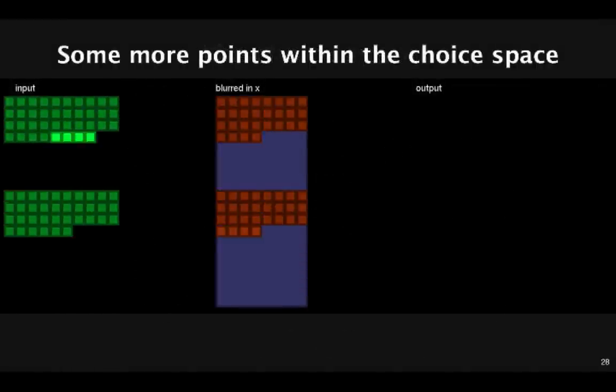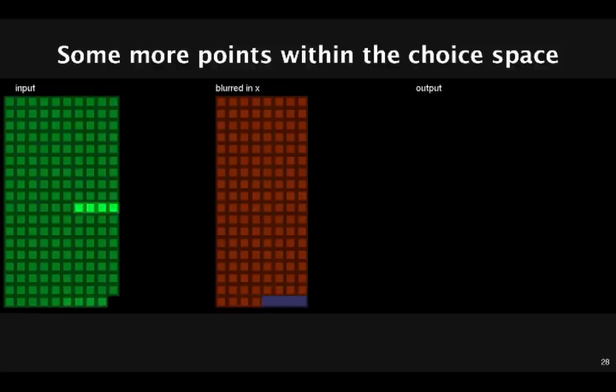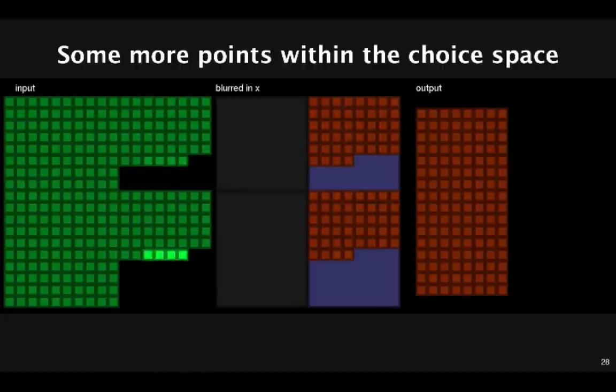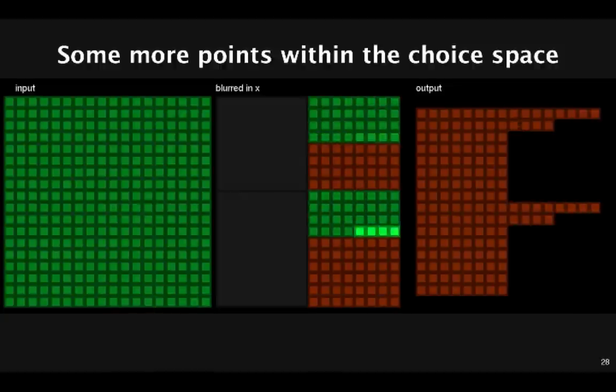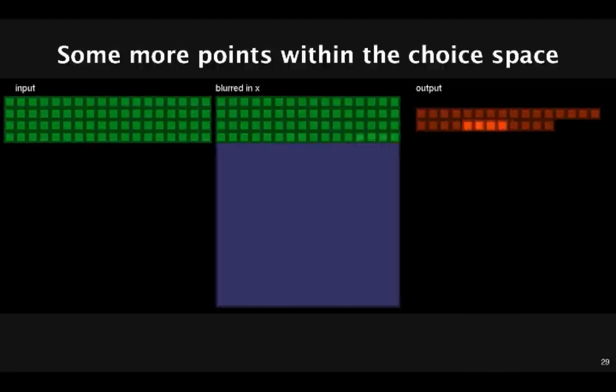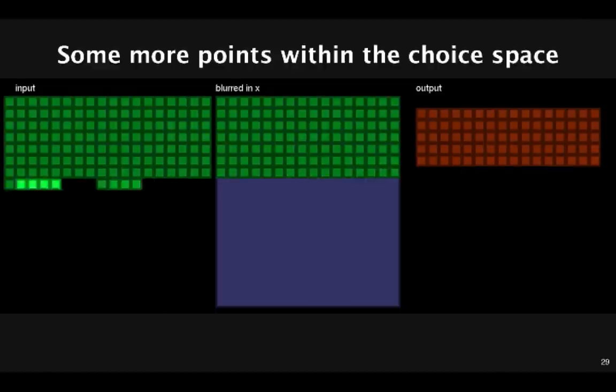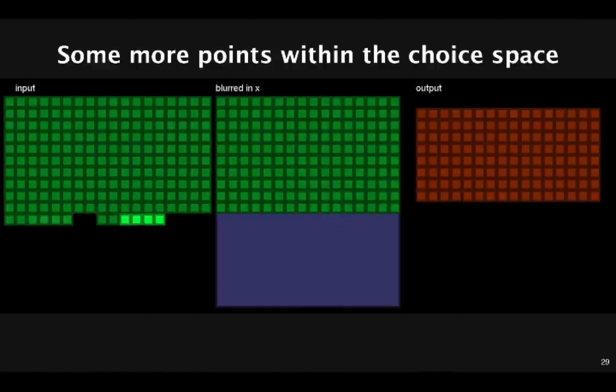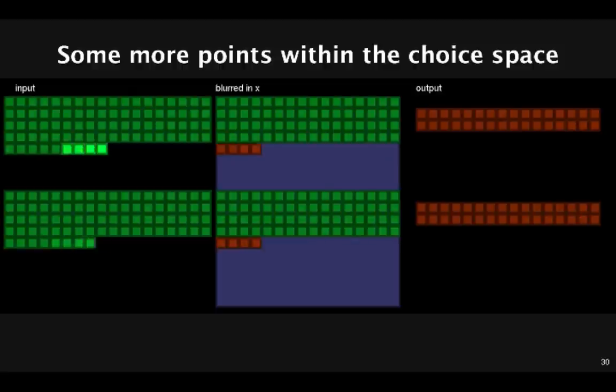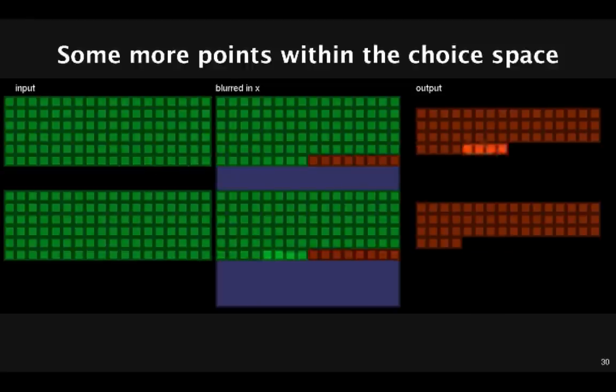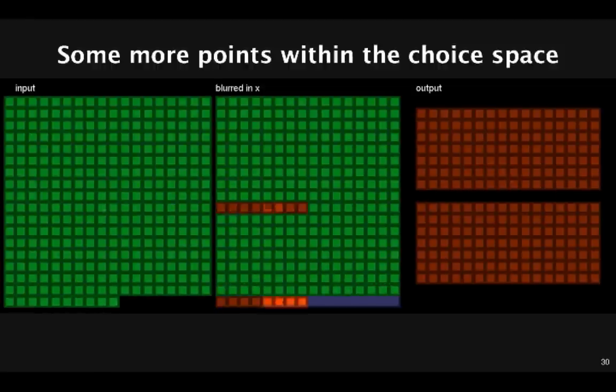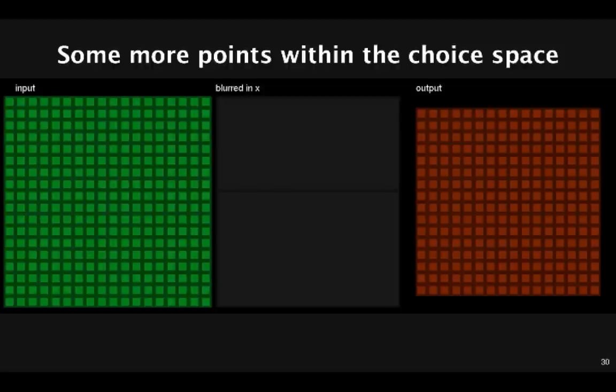So those were the extreme ends of the choice space, but all the fast schedules are somewhere in the middle, and traverse the output image in more complex ways. This one has split the output into four tiles, and for each tile first it computes everything you need of the intermediate buffer using vectors of width 4. And there are two threads, one does the top two tiles, and the other one does the bottom two tiles. This one computes the output in scan lines, vectorized and parallelized within each scan line. It stores everything computed so far of the intermediate buffer so that it can reuse the previous few scan lines. This one still vectorizes within each scan line and walks down the scan lines reusing old values. However, instead of using threads to fill in individual scan lines more quickly, here we slice the output in two and one thread works on the top half, one thread works on the bottom half. This ends up doing a little bit of redundant work at the boundary, but the two threads aren't hammering the same area of memory. This is the fastest schedule we've found for blur.